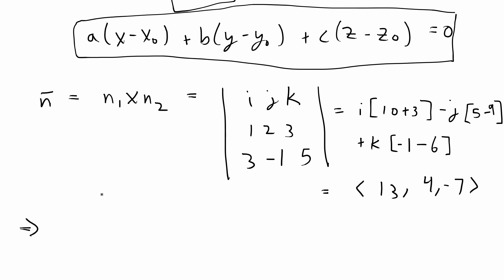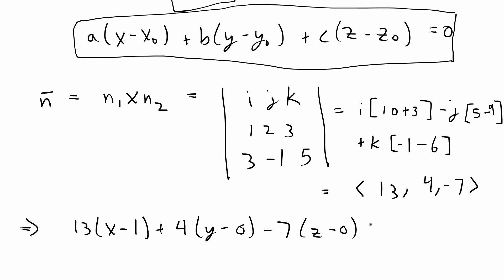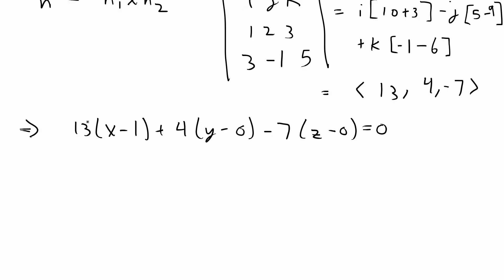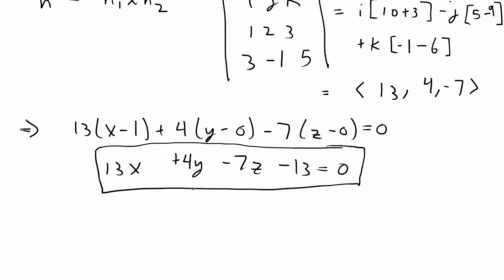So our final solution is going to be 13(x − 1) + 4(y − 0) − 7(z − 0) = 0. If we distribute the coefficients and simplify, our final answer is going to be 13x + 4y − 7z − 13 = 0, and this is our final answer for the planar equation. We're done with this problem.